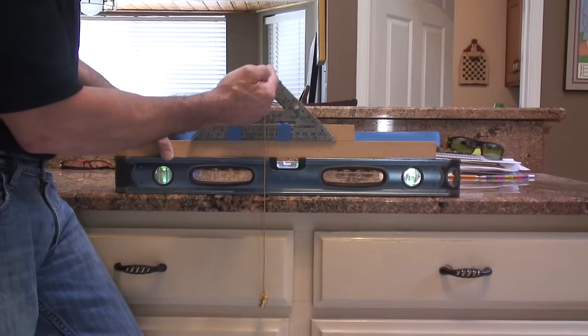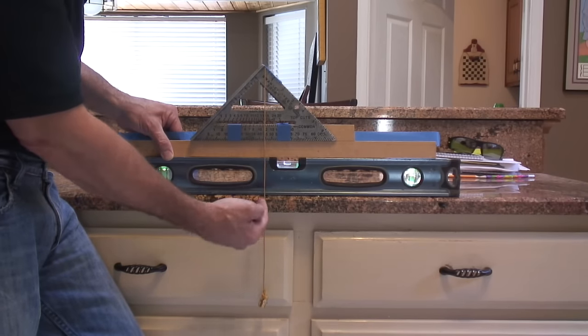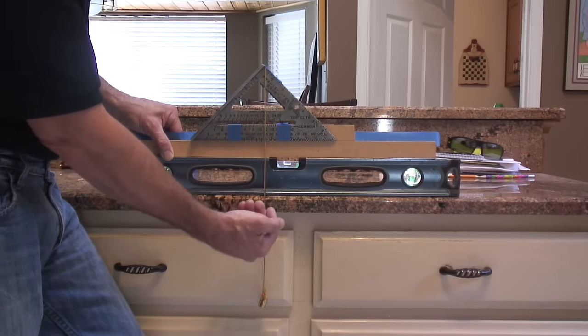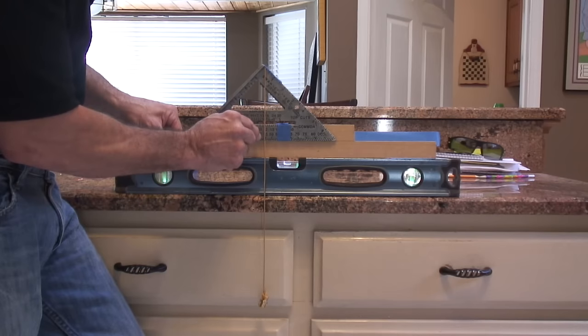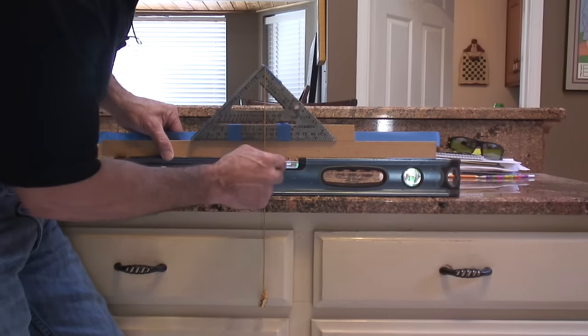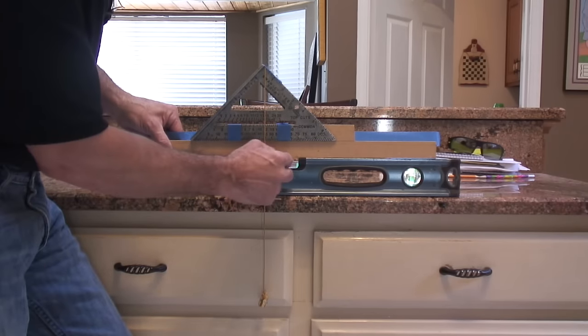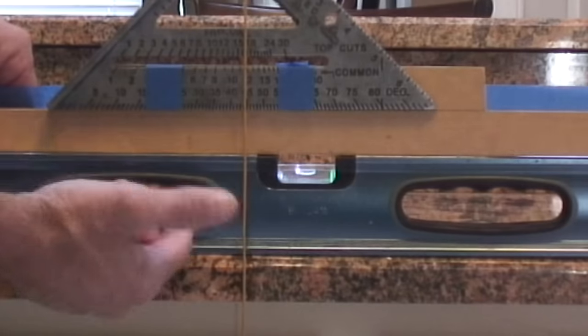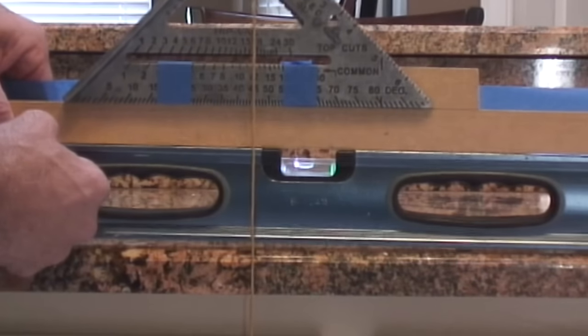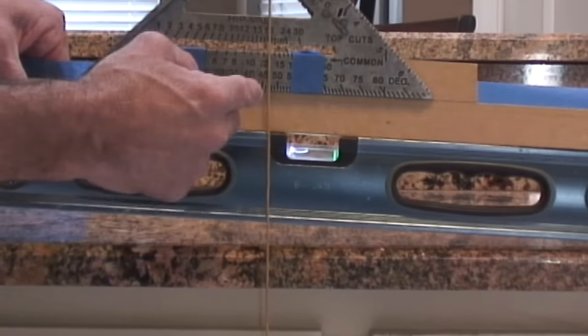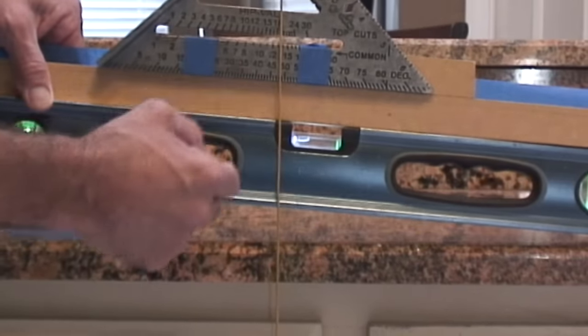You can see right here that this is going straight down because the plumb bob is holding that string straight down. When it does that and it's on the 45 degree mark, that means that I'm right according to this. If I were to take this and pick it up, you'll see the bubble move and the string line will move. And that's telling you that it is off.